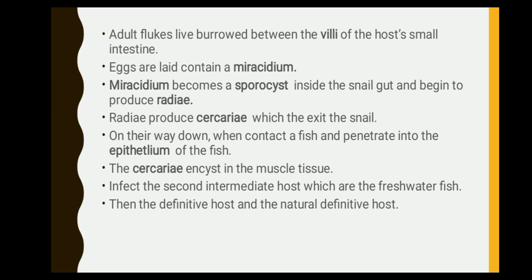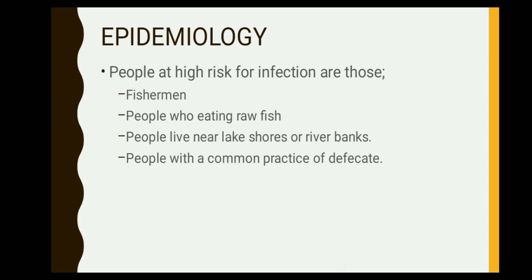The definitive hosts are humans and birds who eat undercooked or raw fish meat. The natural definitive hosts are cats, dogs, foxes, and others. Regarding epidemiology, people at high risk of infection are fishermen, people who eat raw fish, people living near lake shores and river banks, and people with certain dietary practices.